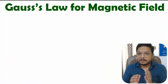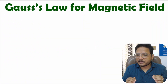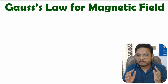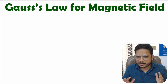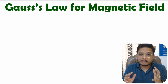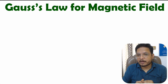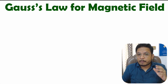Hello friends, welcome to Engineering Panta family. In this video I will explain Gauss's law for magnetic field with great clarity. First of all, I'll explain the basic statement of Gauss's law for magnetic field. It states that the amount of magnetic flux passing through a closed surface is zero.